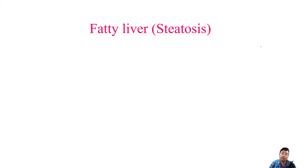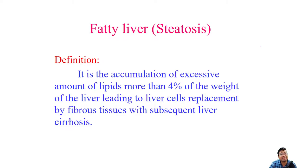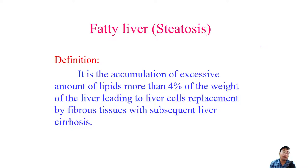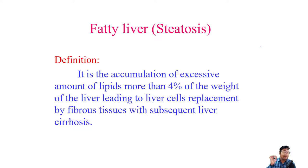Next is the topic of fatty liver, or steatosis. It is the accumulation of excess lipid — more than 4% of the total weight of the liver. Beyond that threshold, liver tissue is replaced by fibrous tissue, ultimately leading to cirrhosis. Some fat is always present in all adult livers regardless of alcohol consumption, though alcohol increases it. There is also a condition known as NASH — non-alcoholic steatohepatitis — meaning fatty liver is very common.